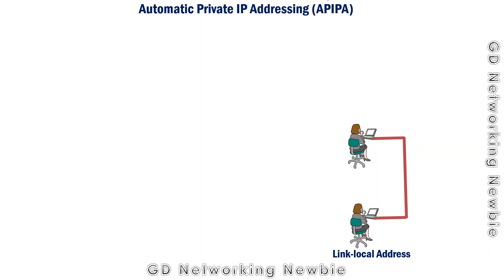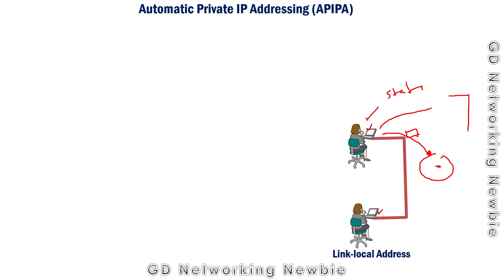To understand this, let's say we have some computers and we want to connect them with other computers or networking devices like a router. These nodes need to have an IP address. We can assign IP addresses statically — this is known as a static IP address. Alternatively, computers can use a DHCP server, which dynamically assigns them an IP address so they can communicate on the network.